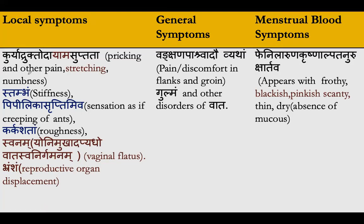Examining the local symptoms in detail: Rukha, toda, ayama, and suptata. Rukha and pricking pain are similar to Charak Samhita's description. Regarding Ayama — as we discussed, in endometriosis when the uterine size increases, especially when endometrium grows in the myometrium, the uterus enlarging causes a stretching effect, which generates Ayama.